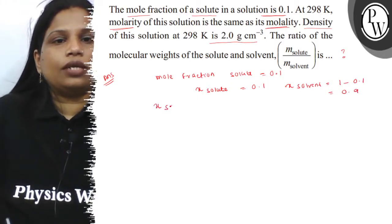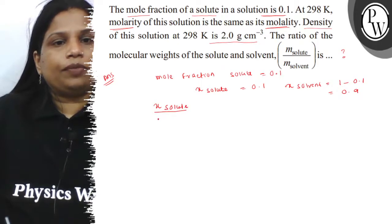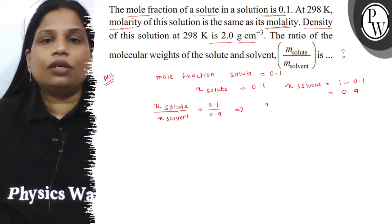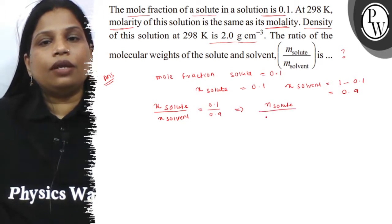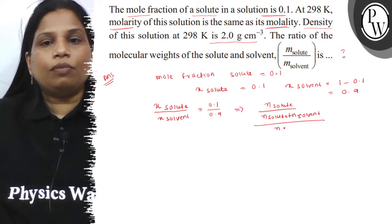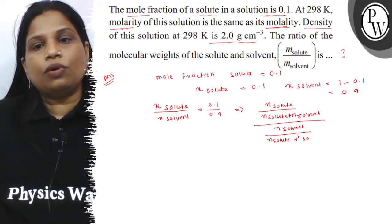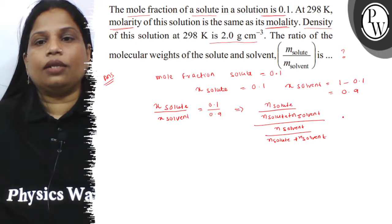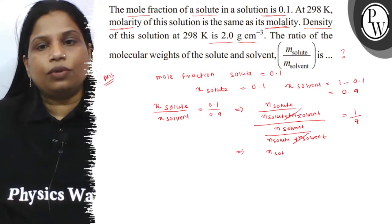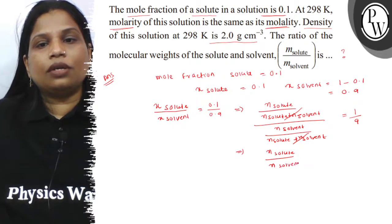What will be the ratio of the mole fraction of the solute and solvent? Mole fraction of solute divided by mole fraction of solvent is equal to 0.1 divided by 0.9. We know the mole fraction is the number of moles of solute divided by total moles. So the ratio simplifies to 1 by 9. Therefore, the number of moles of solute divided by number of moles of solvent is 1 by 9.